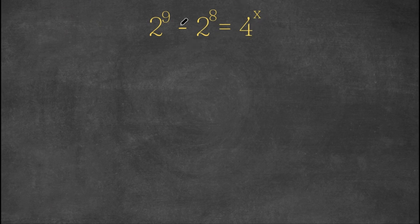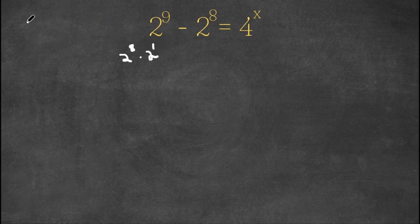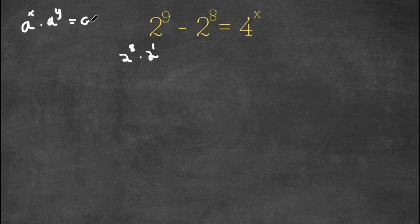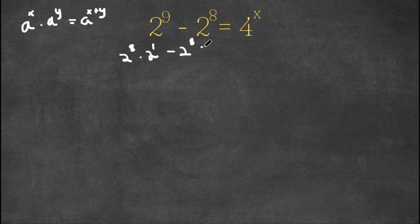What I'm first going to do is rewrite 2 to the power of 9 as 2 to the power of 8 times 2 to the power of 1. Because remember, if we have a to the power of x times a to the power of y, this is equal to a to the power of x plus y. And I'm still subtracting this with 2 to the power of 8, and this is equal to 4 to the power of x.